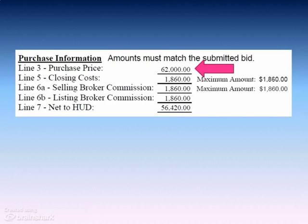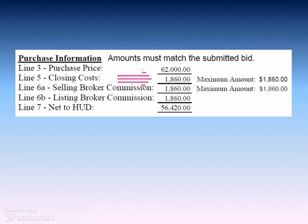Enter the purchase price of the transaction — this is the bid amount. If you are writing a bid using FHA 203K financing, don't include the cost of repairs in the purchase price amount; the cost of repairs is added to the sale price to calculate the mortgage amount but it is not the sale price. If your buyer is using FHA or conventional financing and needs seller assistance with closing costs, FHA will let the buyer apply 3% of the sale price. In this case, that 3% allowance is $1,860, and we will use that number in our example.